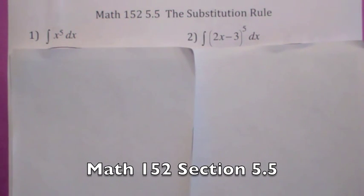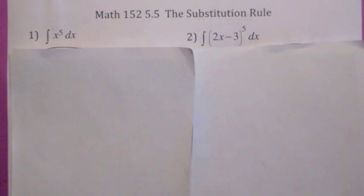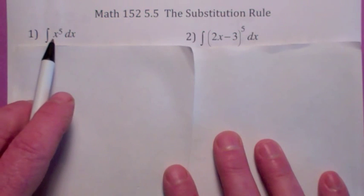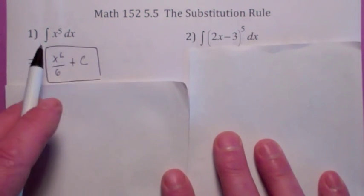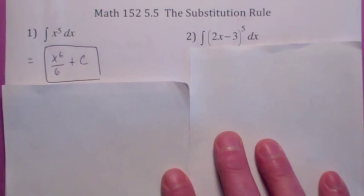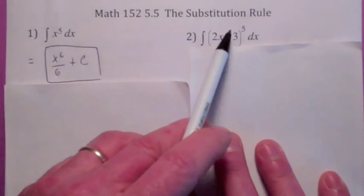This last section in chapter 5 is really kind of a technique of integration. We're going to spend a lot of time on that this quarter when we get to chapter 7. But this is called the substitution rule — very useful. When you look at the antiderivative or the indefinite integral of x to the fifth dx, all you have to do is find any antiderivative and add c, so it becomes x to the sixth over 6 plus c. But we really can't do that with (2x minus 3) to the fifth. We don't have a rule that applies here.